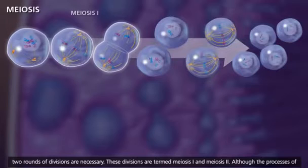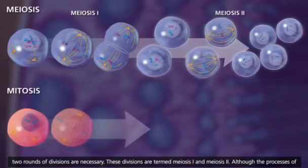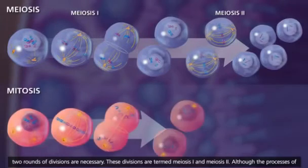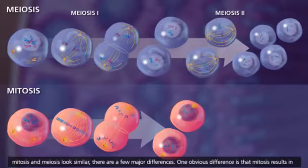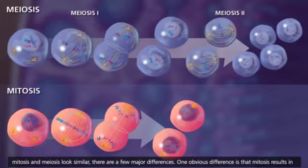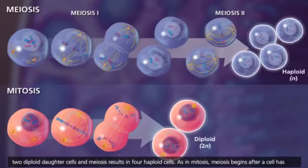These divisions are termed meiosis I and meiosis II. Although the processes of mitosis and meiosis look similar, there are a few major differences. One obvious difference is that mitosis results in two diploid daughter cells, and meiosis results in four haploid cells.